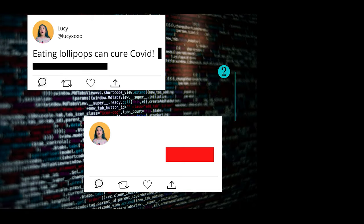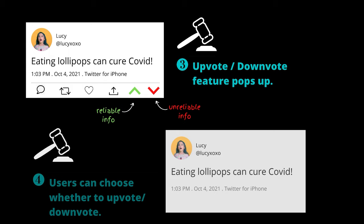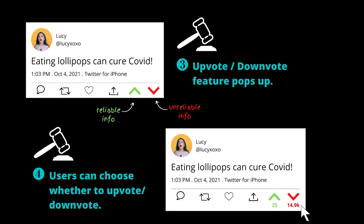Next, it will scan through the post for any keywords related to a possible misinformation trend. Then, Factor will attach two icons on the tweet — an upvote and a downvote icon. It's really simple. Upvote means you find the statement reliable and true. Downvote means you find it unreliable or false. I don't think lollipop can cure COVID, so downvote.